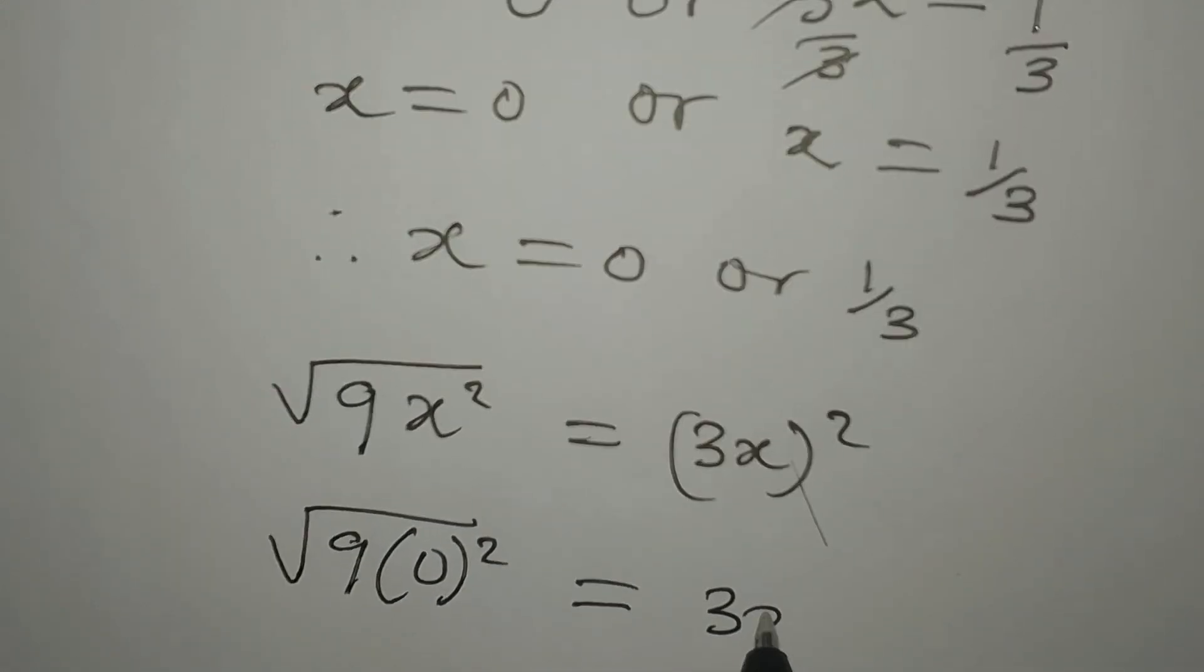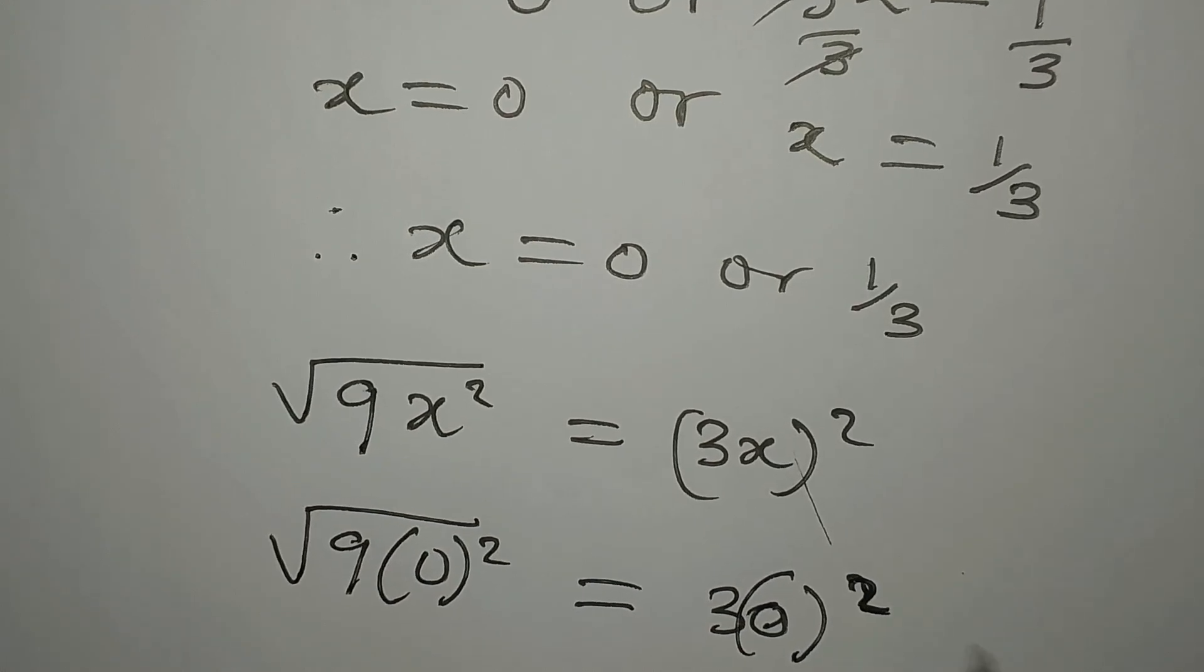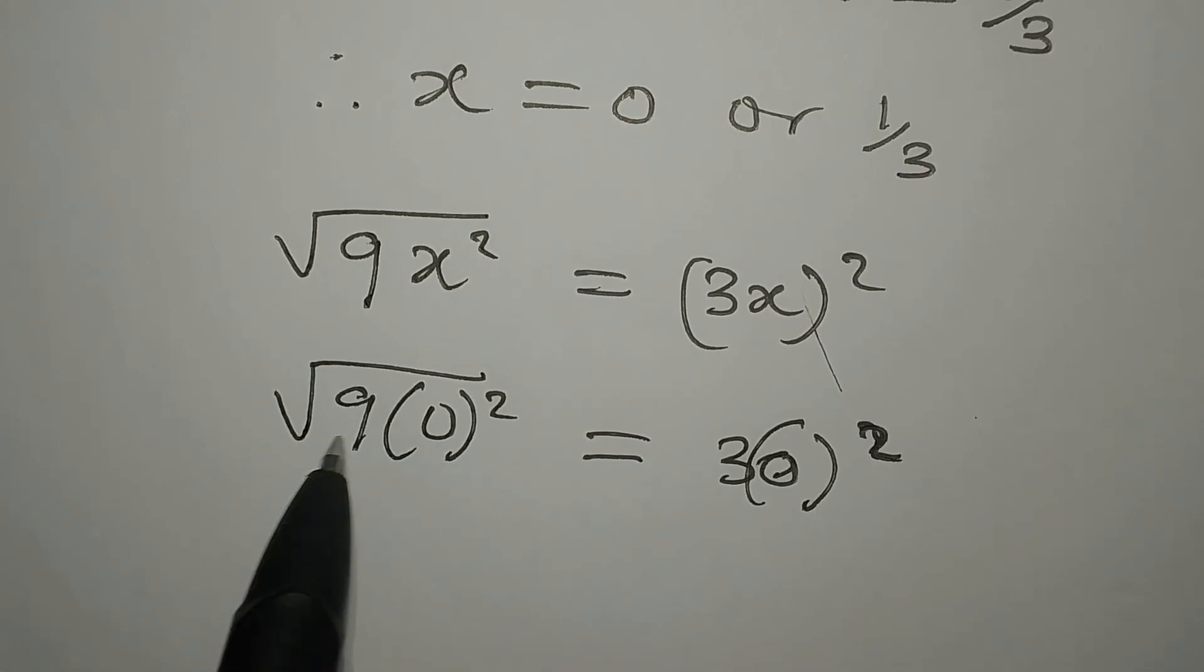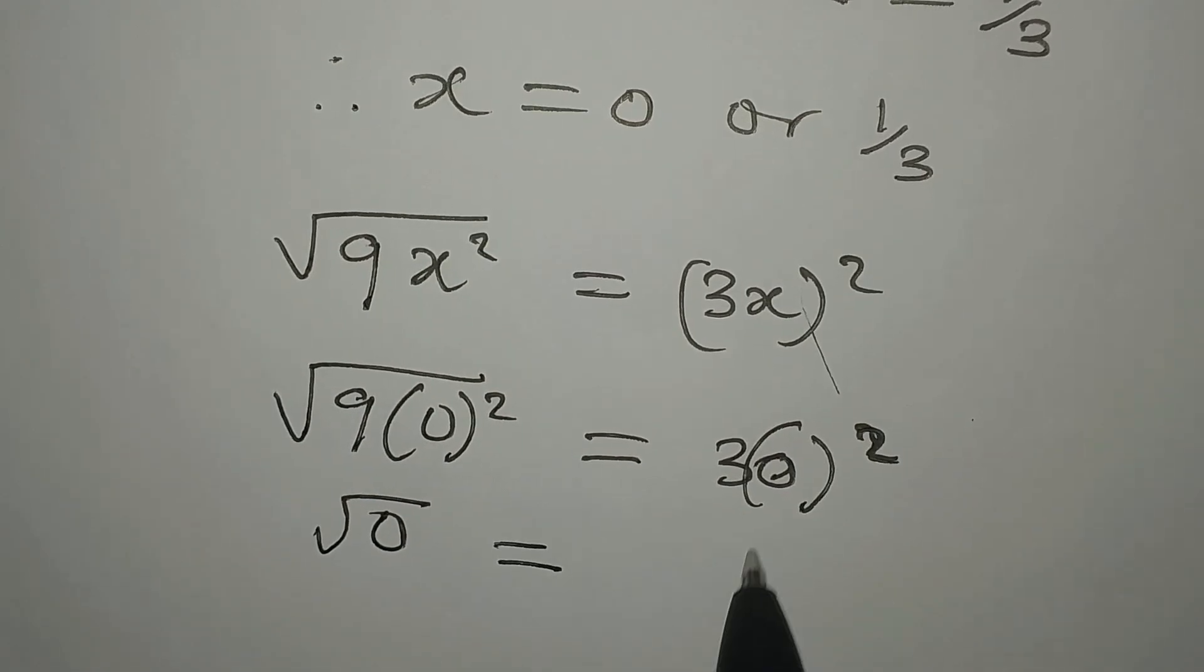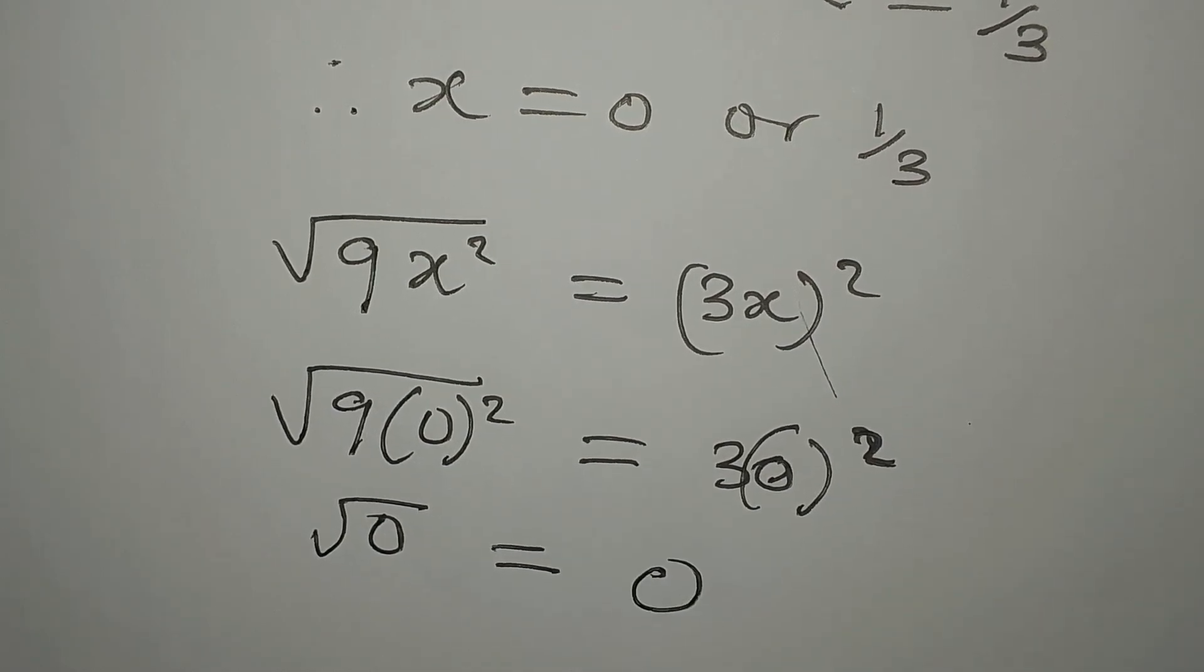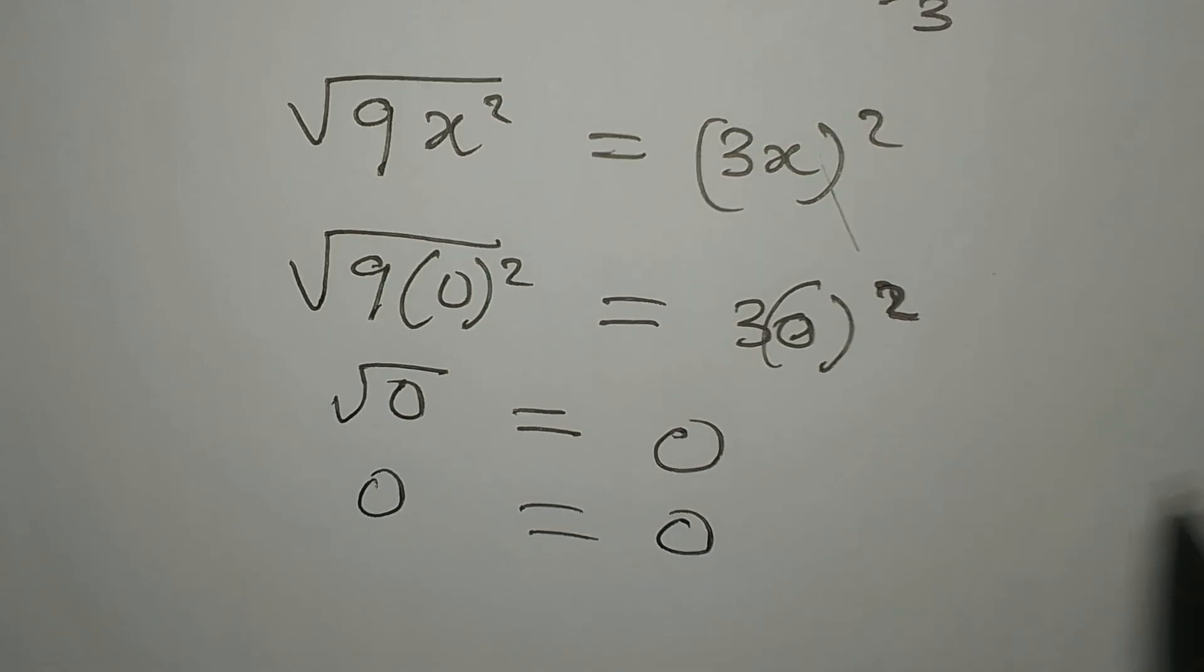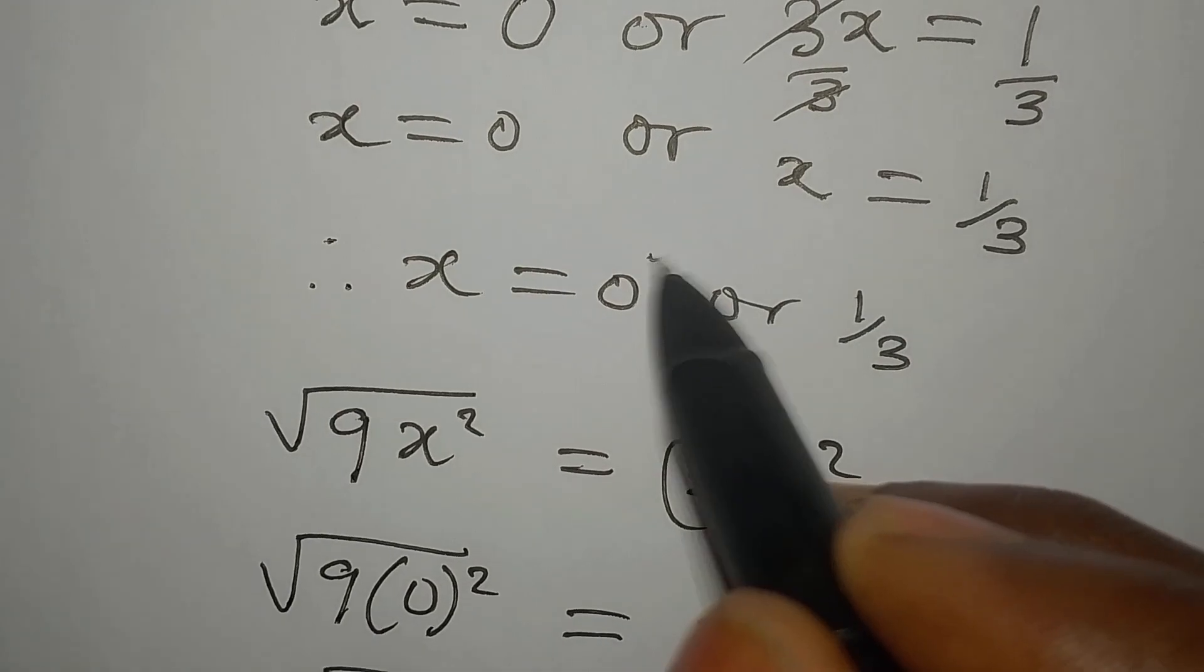0 squared is 0 times 9 is 0, and square root of 0 is 0. This equals 3 times 0 squared is 0 times 3 is 0. So 0 equals 0, and this means that x equal to 0 is okay.